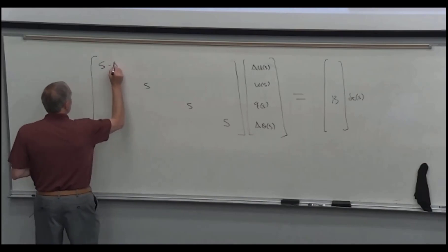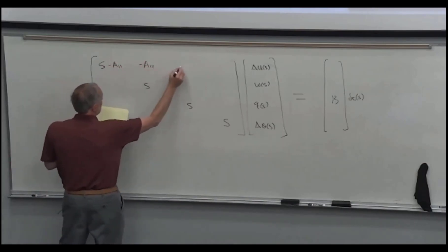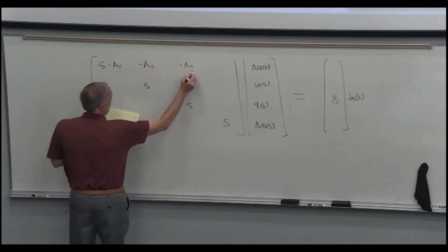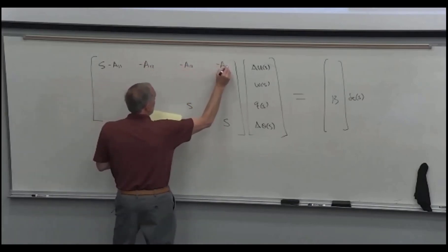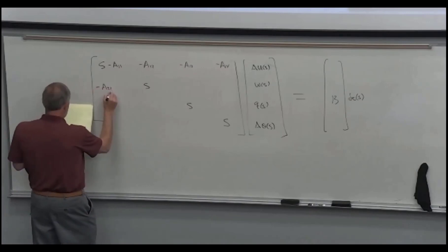And then we have to subtract off each of the A elements. So here we'll write out each individual one. Those are the individual elements of the A matrix. They're all minus because we shift them over here.